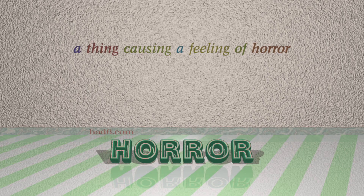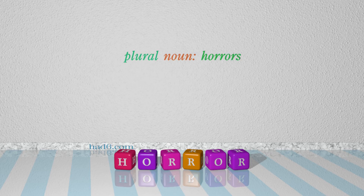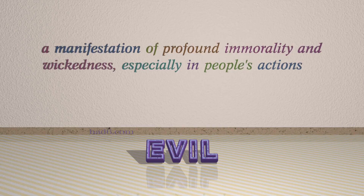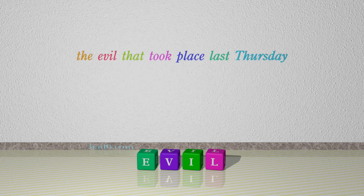Number 6: Horror. Which means a thing causing a feeling of horror. For example (plural noun: Horrors): The evil that took place last Thursday. Number 7: Evil. Which means a manifestation of profound immorality and wickedness, especially in people's actions. For example: The evil that took place last Thursday.